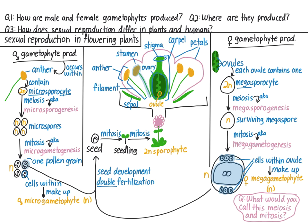In the next video, we'll add even more detail to how the male gametophyte and the female gametophyte are produced. And in the video after that, we'll examine double fertilization and seed development. But we're not finished here yet — now that we have a better picture of plant reproduction, let's complete our comparison of sexual reproduction in humans and flowering plants.